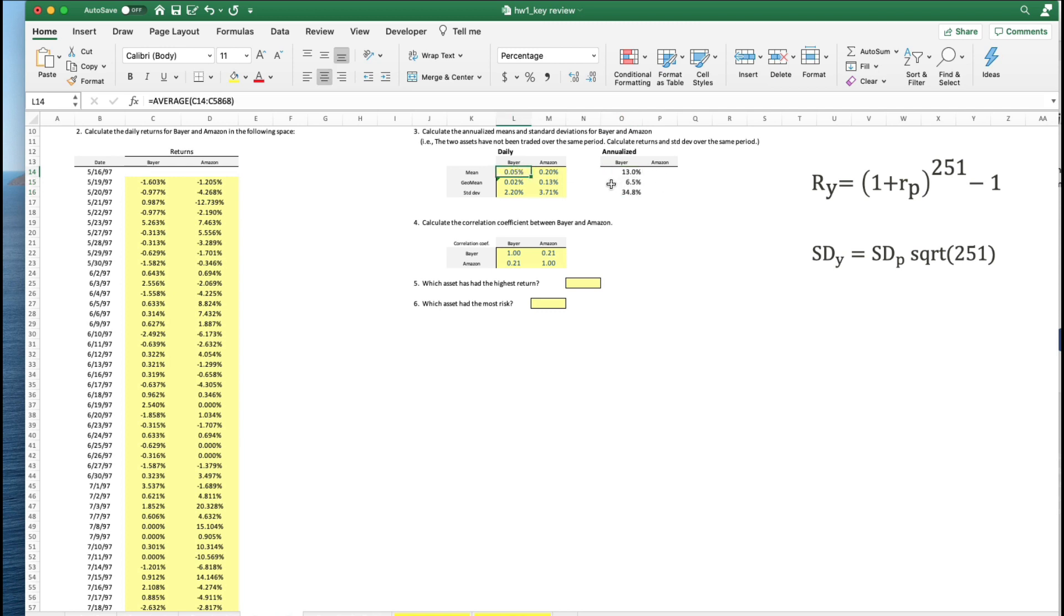So this 0.05% daily return works out to be a 13% annual return. 0.02 works out to be 6.5% annual return. 2.2% works out to be a 34.8% standard deviation. Copy those over to the Amazon case. And we have the Amazon-based returns. So that's how you take daily data and annualize them.